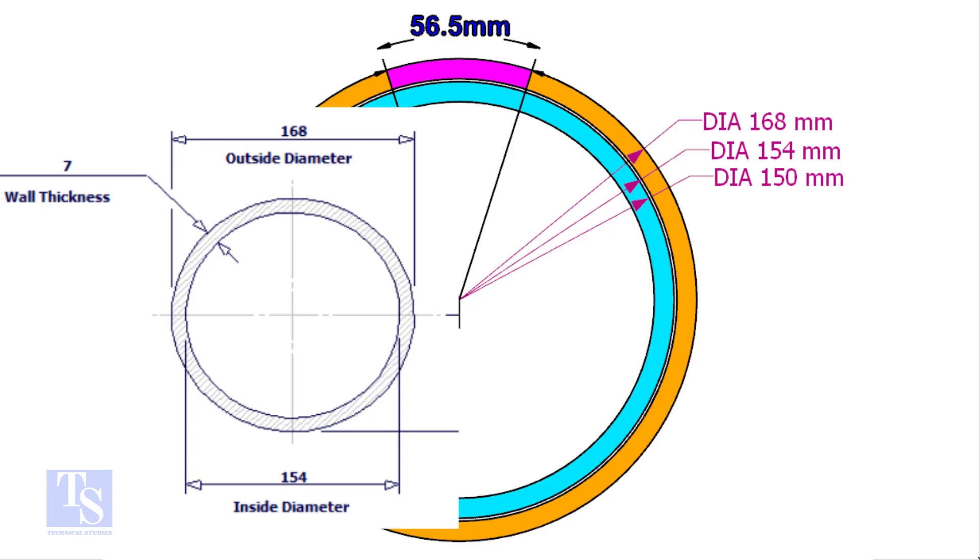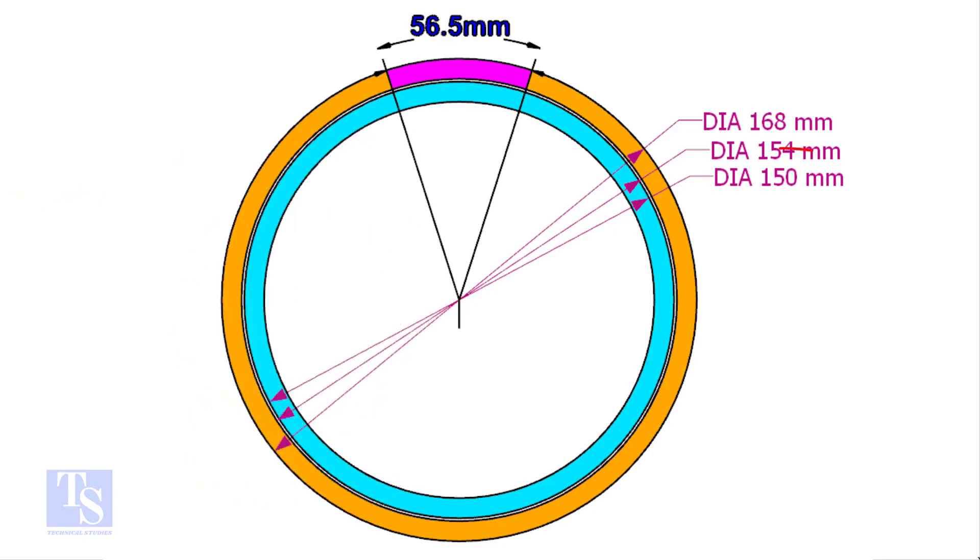The ID of a 6 inch 40 schedule pipe is 154mm. The OD of the clamp shall be 4 to 5mm less than the pipe ID. This clamp OD is 4mm smaller than the ID of the 6 inch pipe.